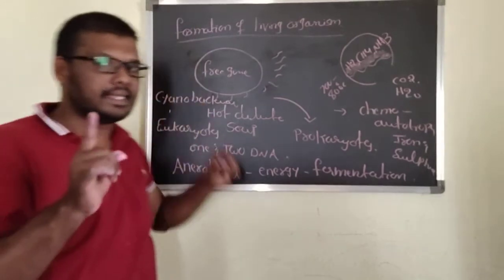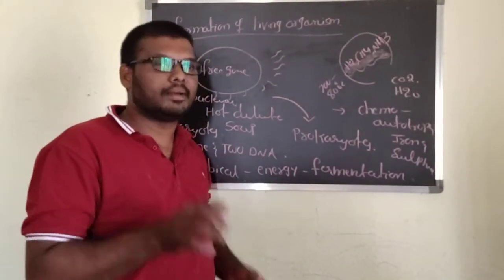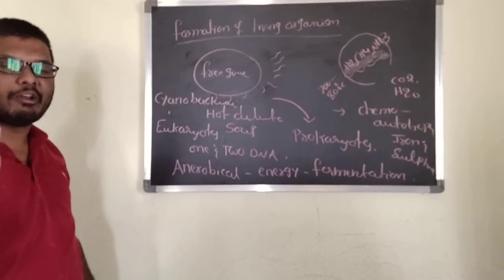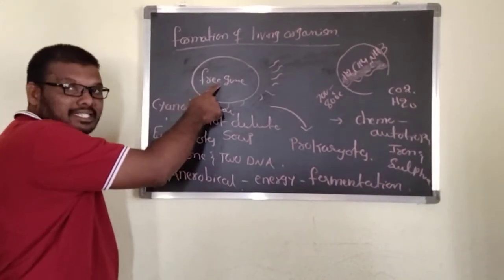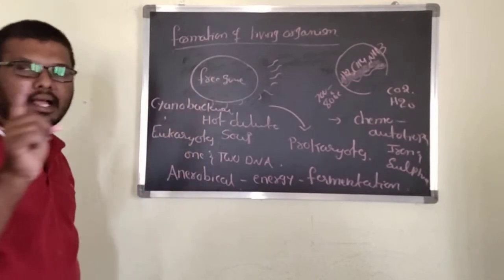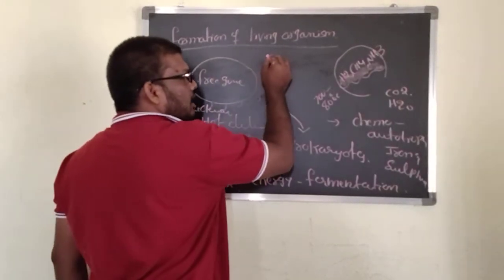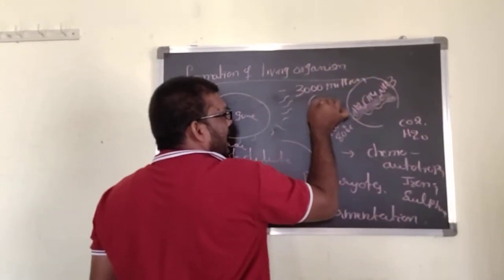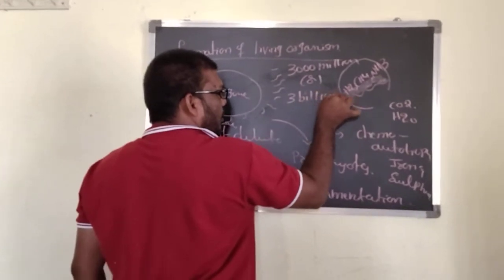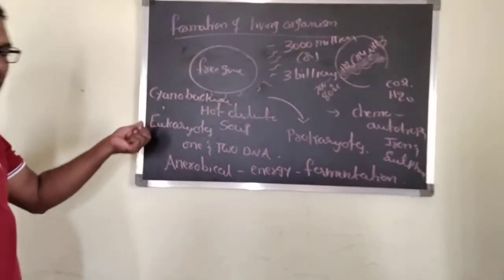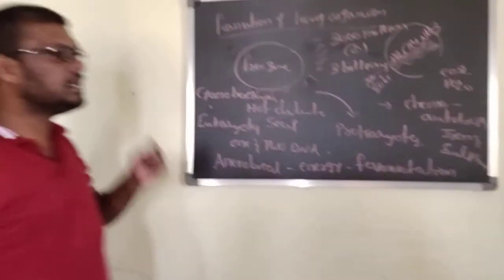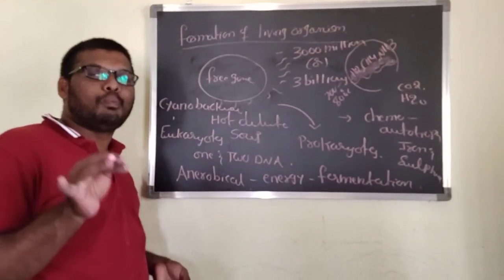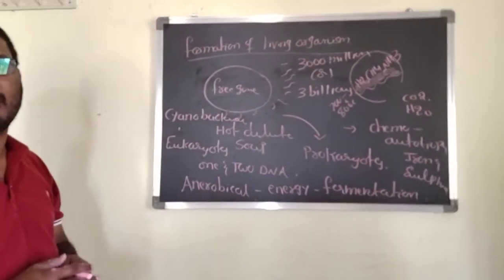The universe was formed 20 billion years ago. Earth was formed 4.5 billion years ago. Acellular forms — these are the free genes — were formed 3000 million years, or 3 billion years ago. Cellular forms — eukaryotes and prokaryotes — were formed 2000 million, or 2 billion years ago.